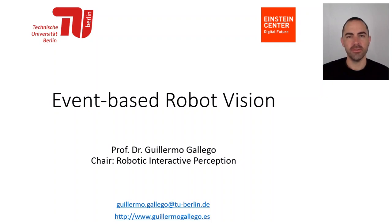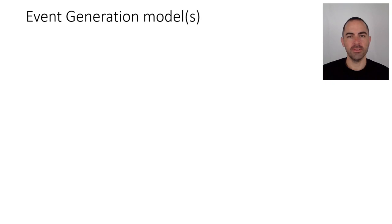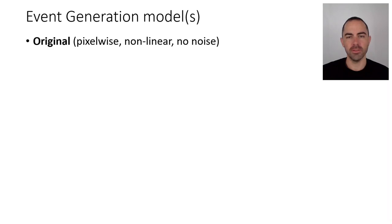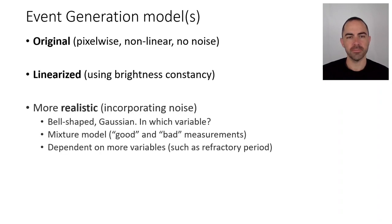Hello, welcome to another video on event-based robot vision. Today we're going to take a look at event generation models. We will review the original one from previous videos — it's pixel-wise, nonlinear, and doesn't include noise — and then spend most of the video talking about the linearized version using brightness constancy. At the end, we'll give highlights about more realistic event generation models that incorporate noise using a probabilistic formulation.